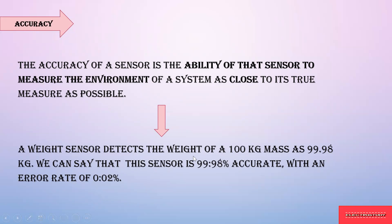Consider a weight sensor detecting a mass of 100 kg as 99.98 kg. We can say this sensor is 99.98% accurate. The remaining 0.02 percentage is the error rate produced by the sensor.